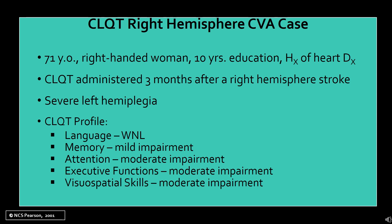Here's our case: a 71-year-old right-handed woman with 10 years of education and a history of heart disease. The CLQT was administered three months after she experienced a right hemisphere stroke, which left her with severe left hemiplegia. Her CLQT profile showed that her language was within normal limits, which we would expect from right hemisphere damage in a right-handed person. Her memory was mildly impaired, attention moderately impaired, and she also had moderately impaired executive function and visual-spatial skills.